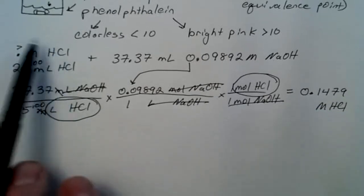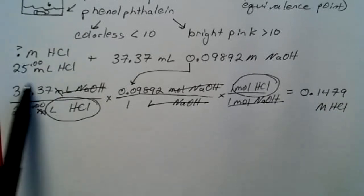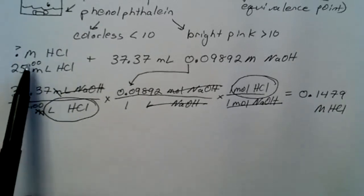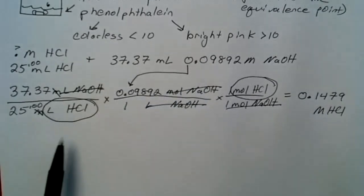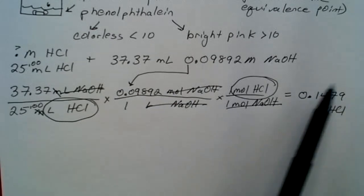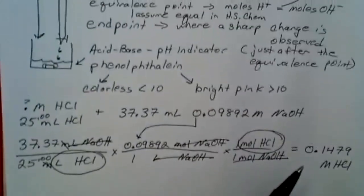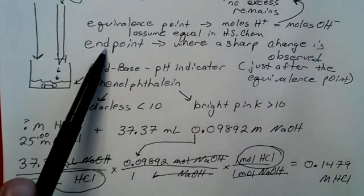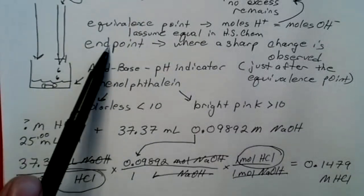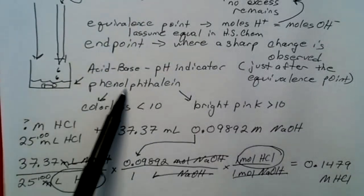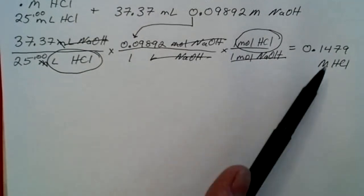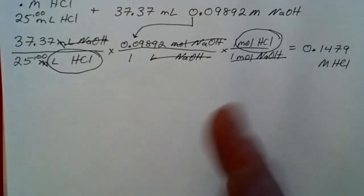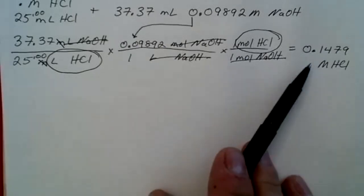In the lab, you might actually perform this multiple times. You would do multiple trials and you would determine exactly how much of the sodium hydroxide it took each time. From that you might get slightly different numbers here, but some of that is also going to depend on how far you went past the equivalence point when you hit the endpoint with your indicator. When you do that and you have several trials, then you can take the average of those to arrive at the true concentration of the HCl.